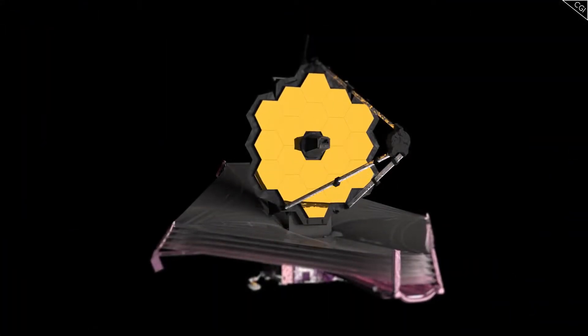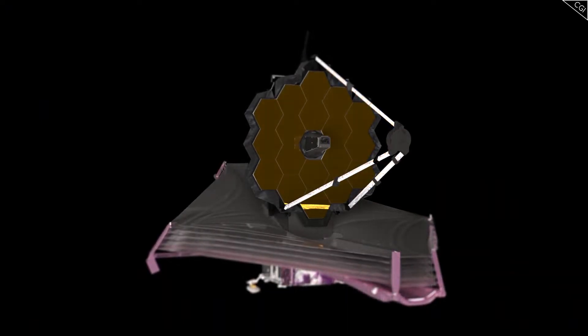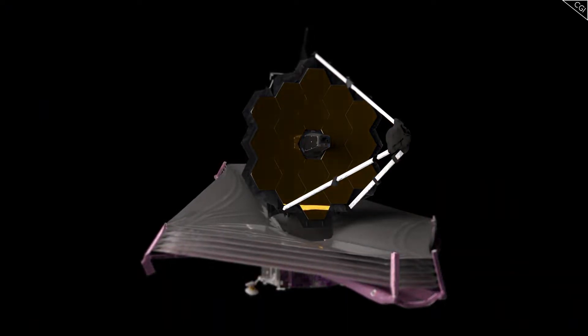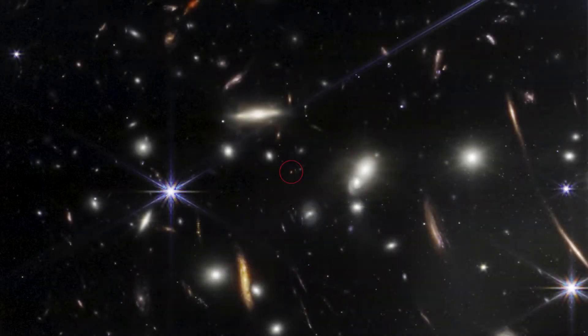What this implies is that if James Webb was able to take such a detailed image in 1 20th of the time, imagine how detailed an image it could take if it was given a comparable amount of time. In other words, this tiny little dot is likely not the best that James Webb can do.